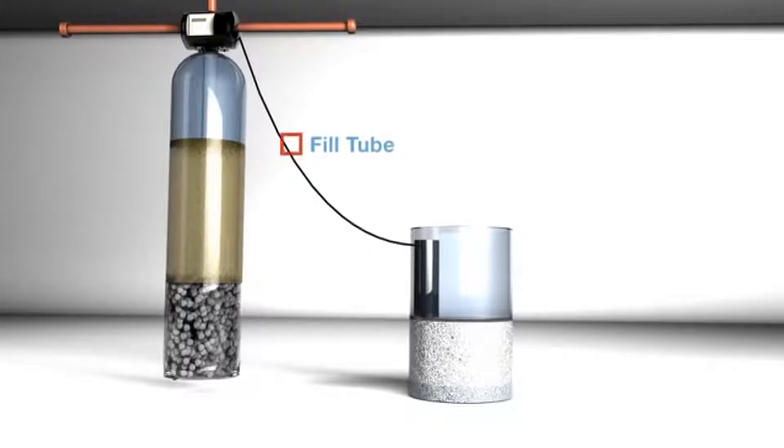Next, we have the fill tube. In the softener process, it's necessary to have a tube that connects the head with the brine tank. This tube has two functions. It's used to draw the brine out of the brine tank, and it's also used to refill the brine tank for future regeneration.